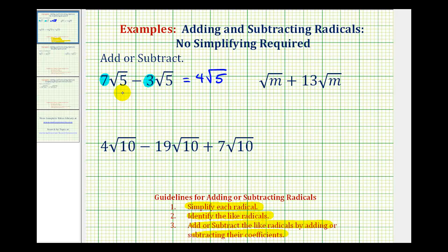Another way to show this would be to factor out the common factor of √5. So if we factored out √5 and put it on the right here, notice how we'd be left with (7 minus 3) times √5, which would give us 4√5. We normally don't show it this way, but we could.